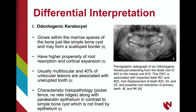Comparing odontogenic keratocysts to simple bone cysts, both lesions may grow within the bone marrow spaces and may have scalloped borders. OKCs have a higher likelihood than simple bone cysts of root resorption and cortical expansion. Additionally, OKCs tend to be multilocular, with 40% of unilocular lesions associated with unerupted teeth. Histopathologically, OKCs are lined with parakeratinized epithelium with basal cells showing a characteristic picket fence or tombstone appearance, whereas simple bone cysts are pseudocysts lacking an epithelial lining. The example of OKC shown displays a multilocular mandibular lesion causing root displacement and potential root resorption.